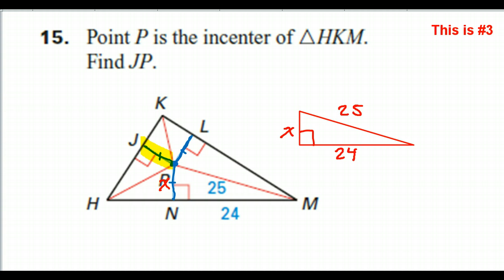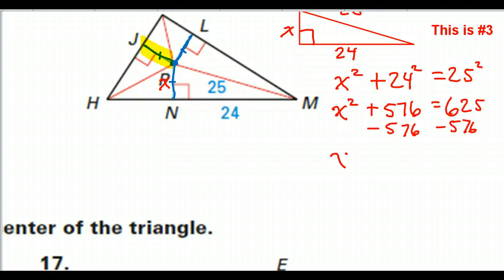Pythagorean theorem: leg squared plus leg squared equals hypotenuse squared. So that's going to give me x² + 576 = 625. If we subtract 576 from both sides, that gives me x² = 49.